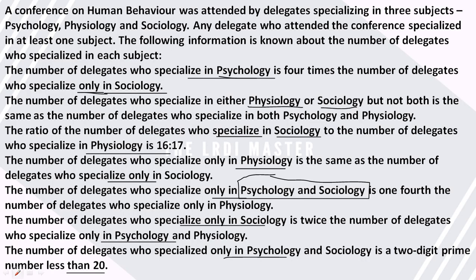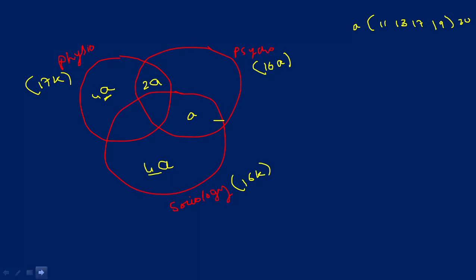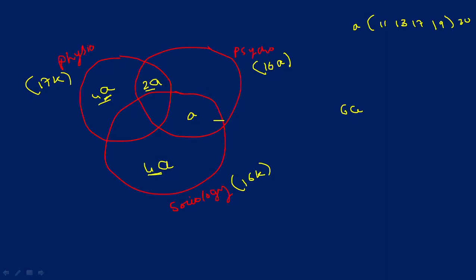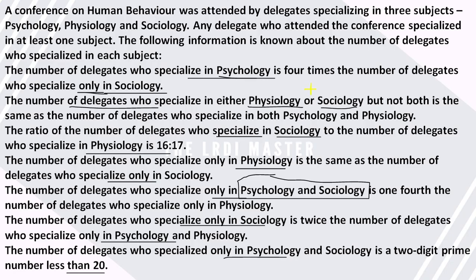Now we revisit the skipped point: the number of delegates who specialized either in physiology or sociology but not both. Physiology only gives us 6a, and sociology only gives us the value we assigned — so combining these gives us 9a.